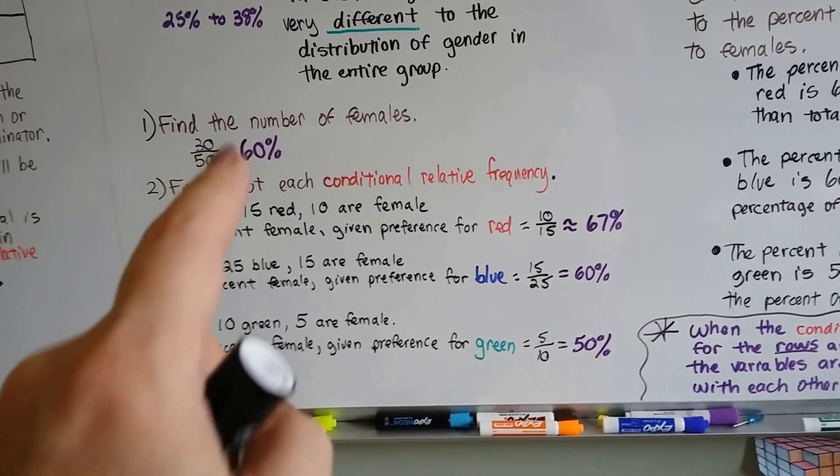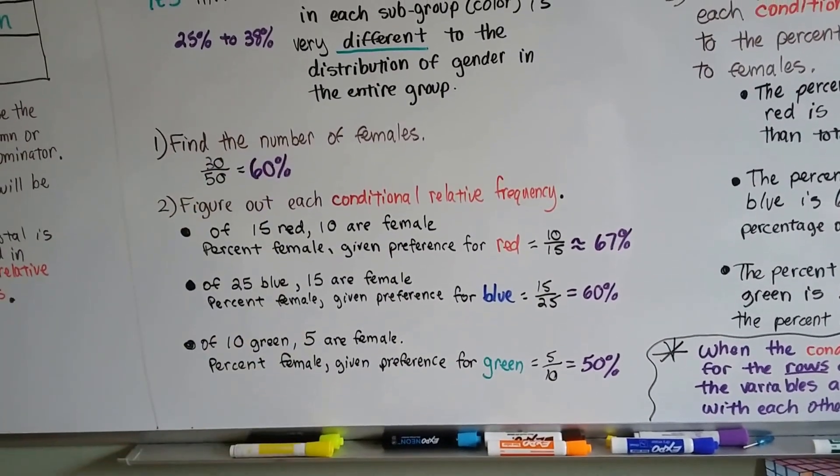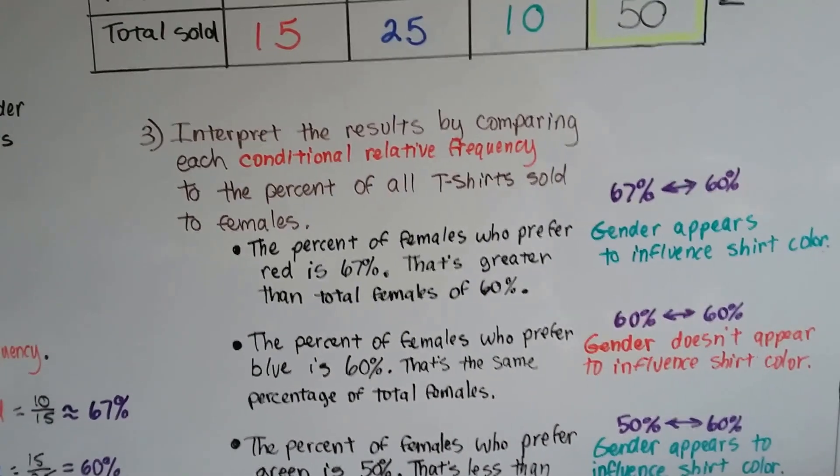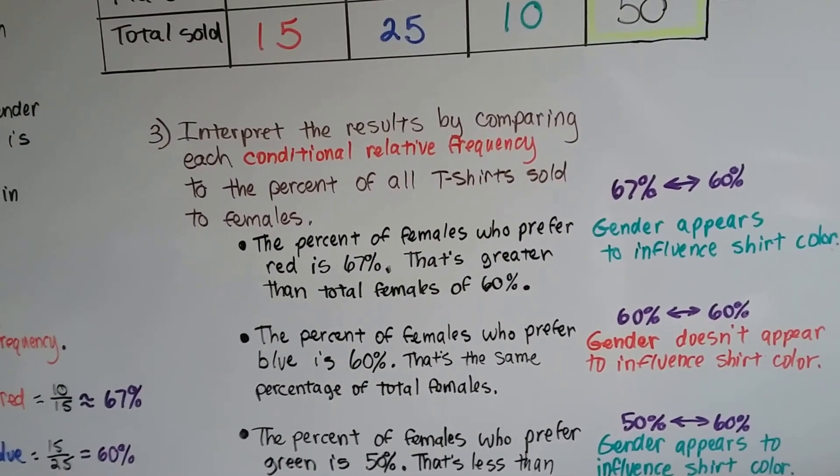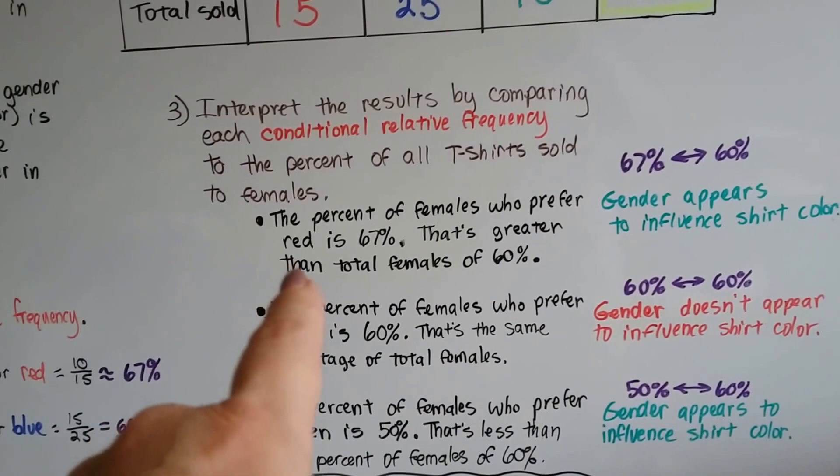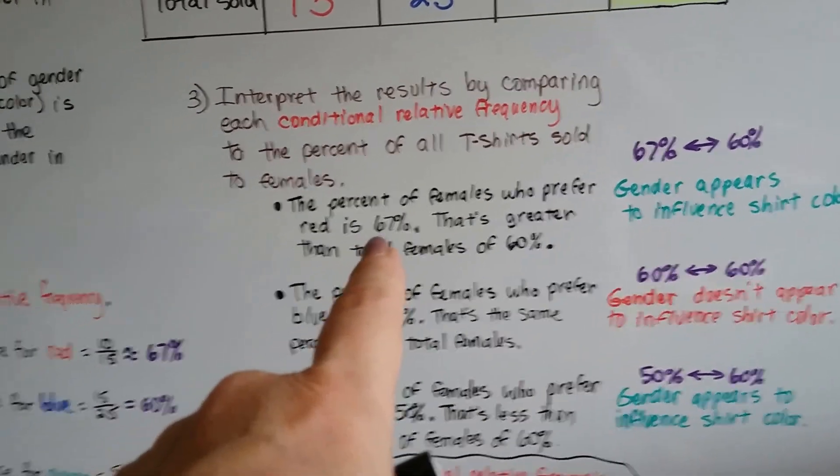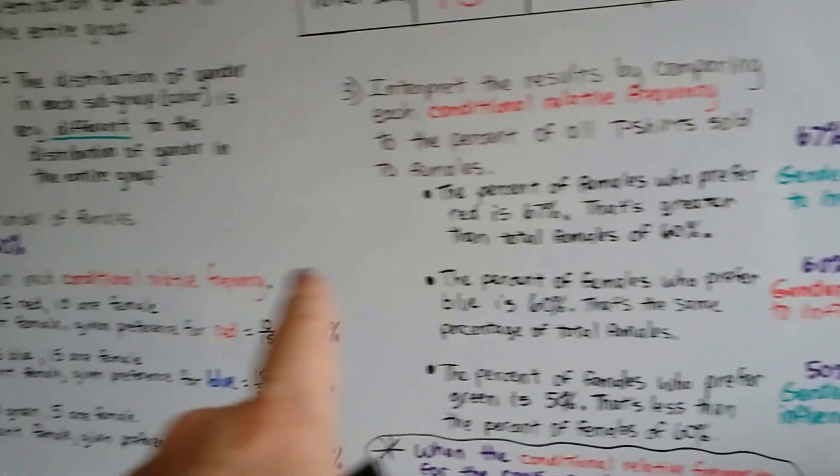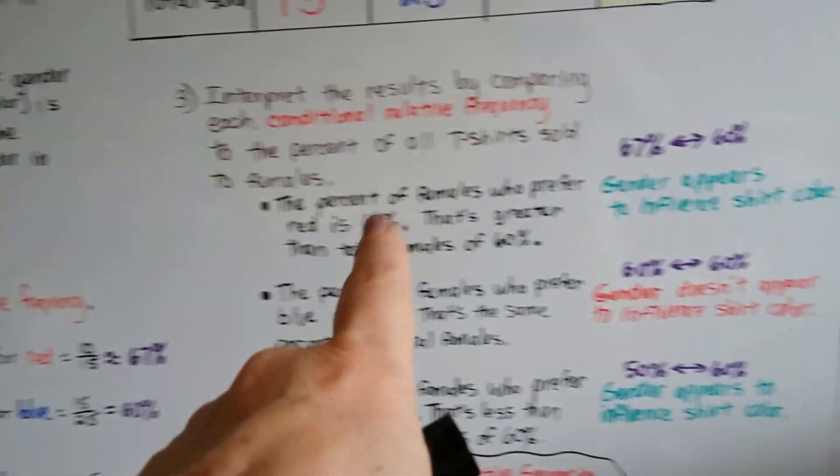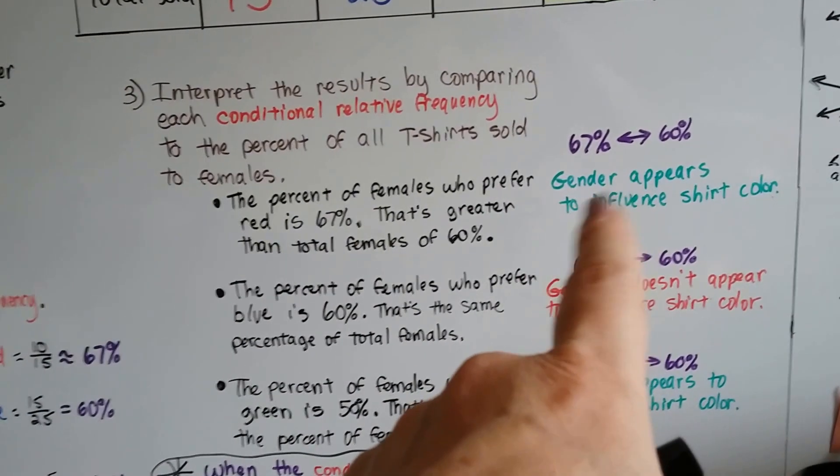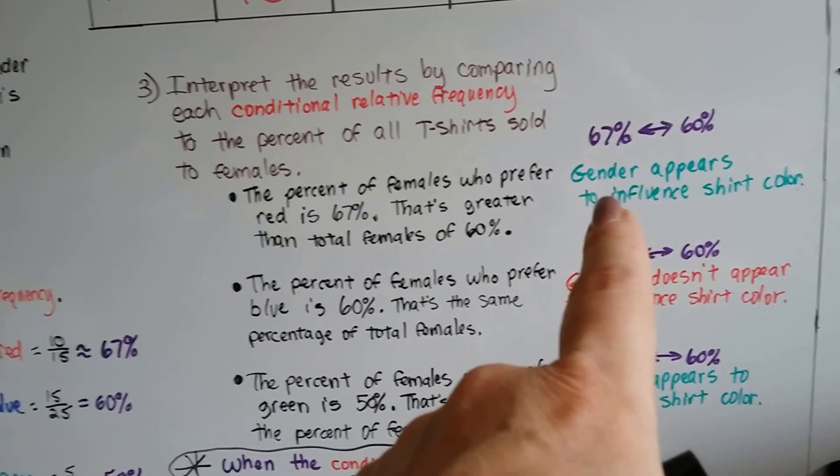So now we've got our percentages for the female, red, blue, and green over the total percentage of females of 60%. Now we can compare these two percentages. We interpret the results by comparing each conditional relative frequency to the percent of all t-shirts sold to females. The percent of females who prefer red is 67%. And that's greater than the total females of 60%. We got 67% compared to 60%, so that means gender did influence the shirt color.